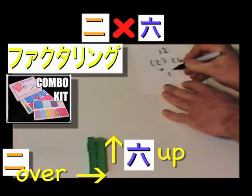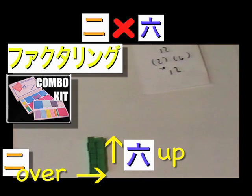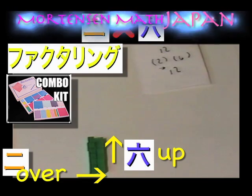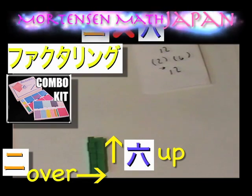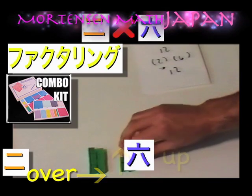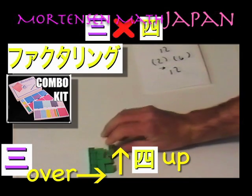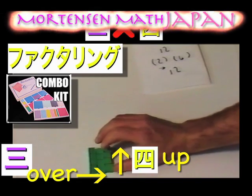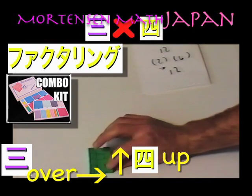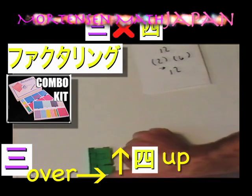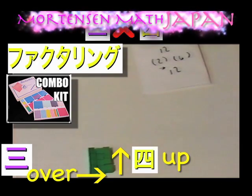Let's see if we can factor 12 again. What is factoring again? Factoring is building a rectangle. Let's see if we can build a rectangle that is 3 over. Yes. We built a rectangle that is over 3.